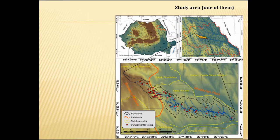This is one of the study areas. It's located in the northeastern part of Romania, at the contact between the Moldavian Plateau, the Moldavian Plain, and the Suceava Plateau. It's an area with a very high density of Neolithic sites — actually this is the site where the famous Cucuteni culture was discovered.